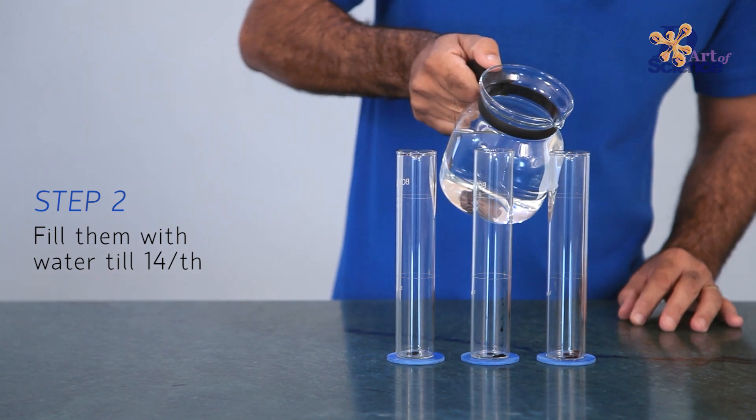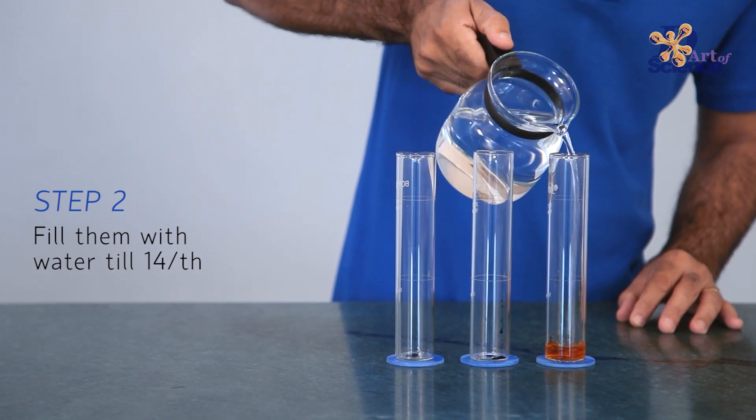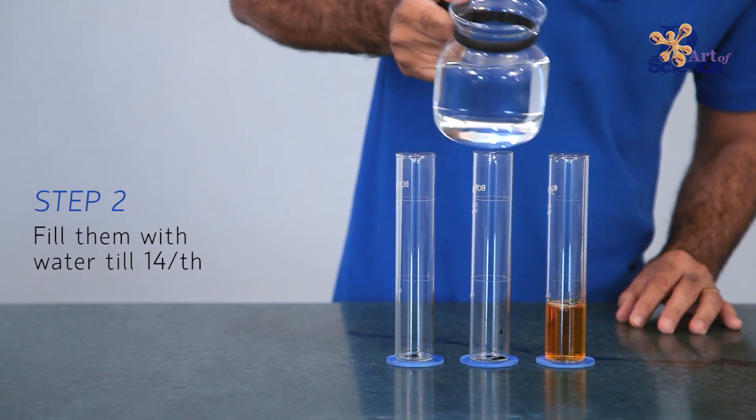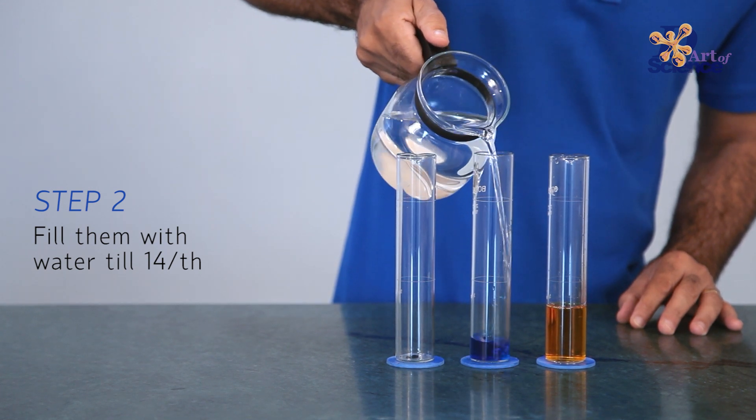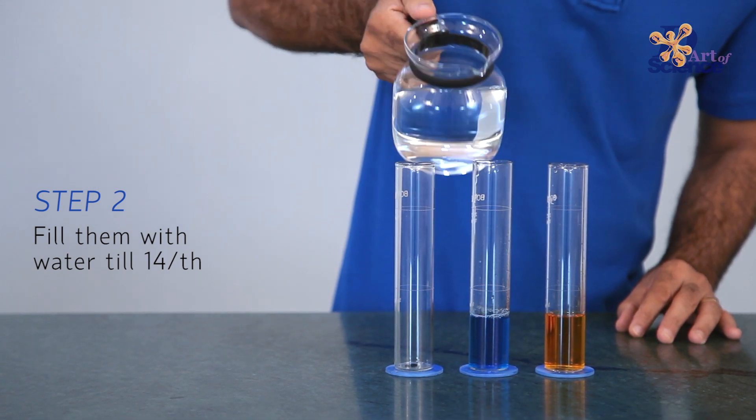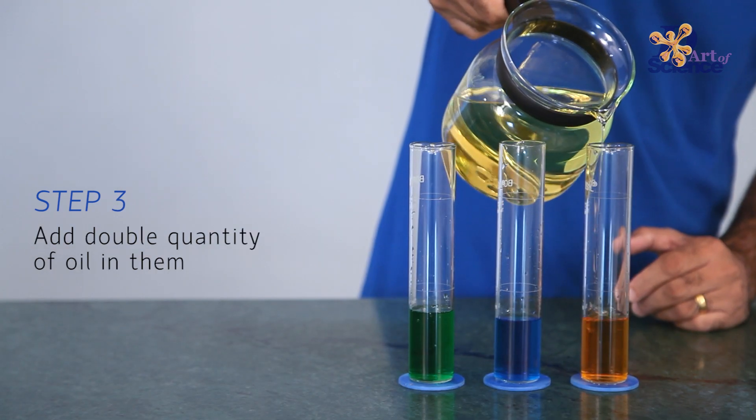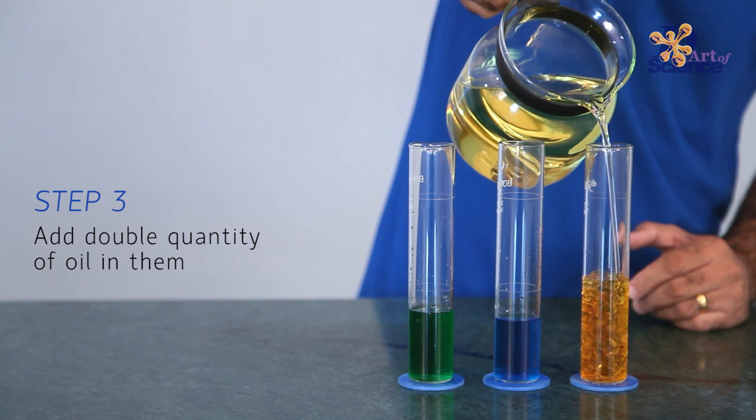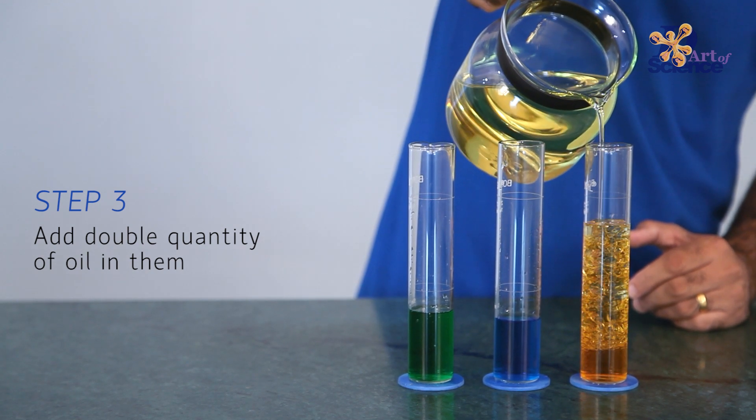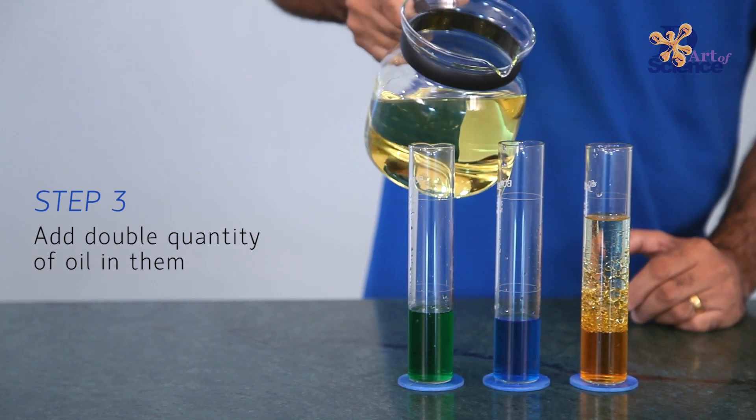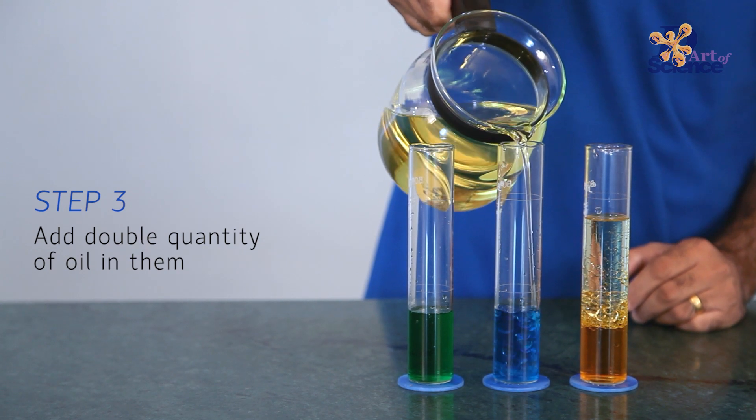So how do these easy DIY lava lamps work? These work with some very basic science concepts of density and hydrophobic properties. Oil is hydrophobic and so it doesn't mix with water. Oil is also less dense than water and therefore it floats on top of the water.